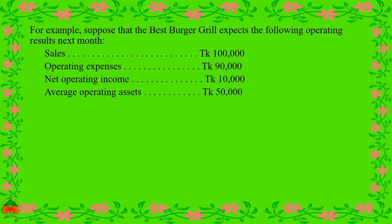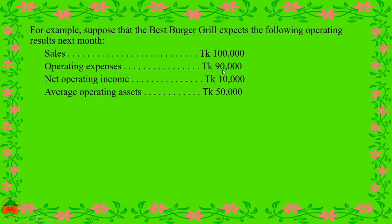Now let's calculate ROI with a practical example. Suppose Best Burger Grill expects the following results next month: sales of $100,000, operating expenses of $90,000, net operating income of $10,000, and average operating assets of $50,000.